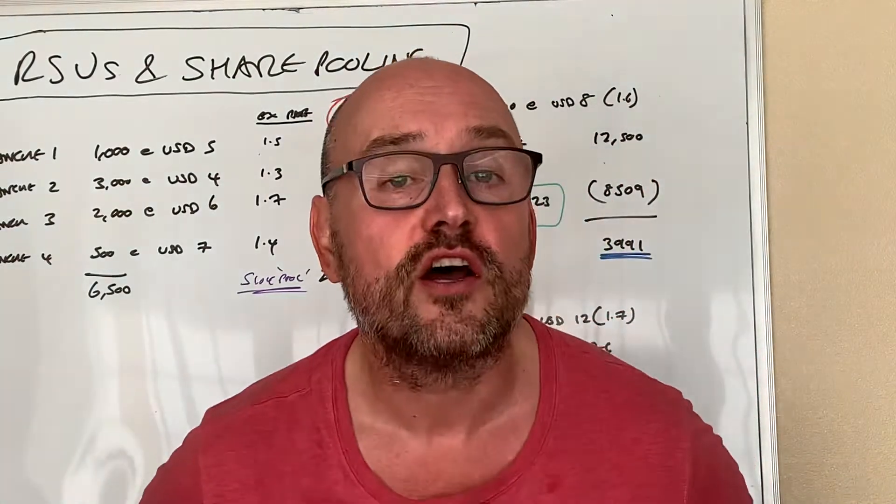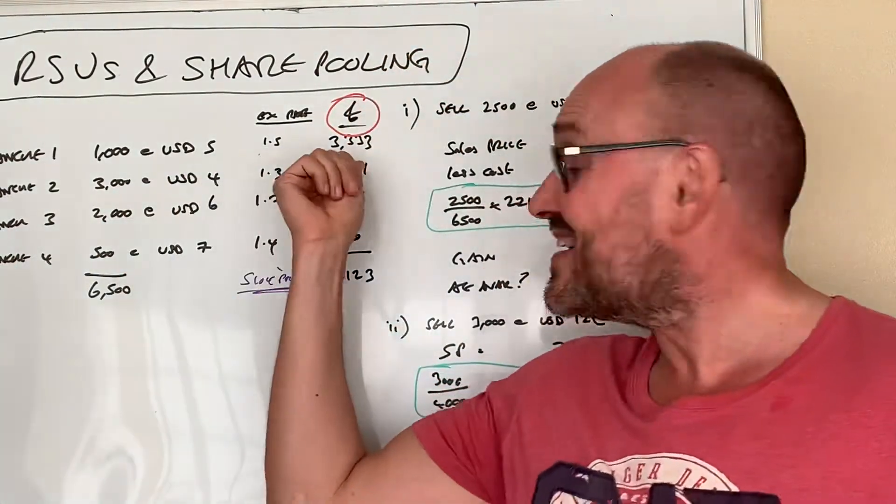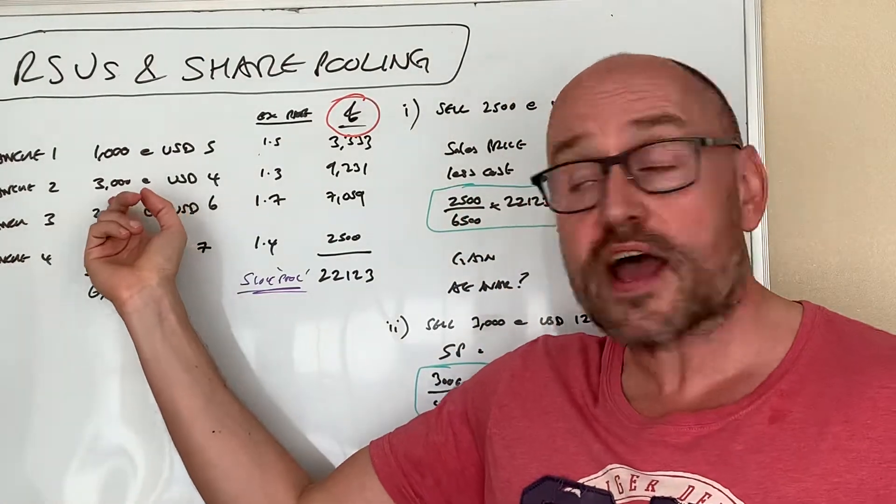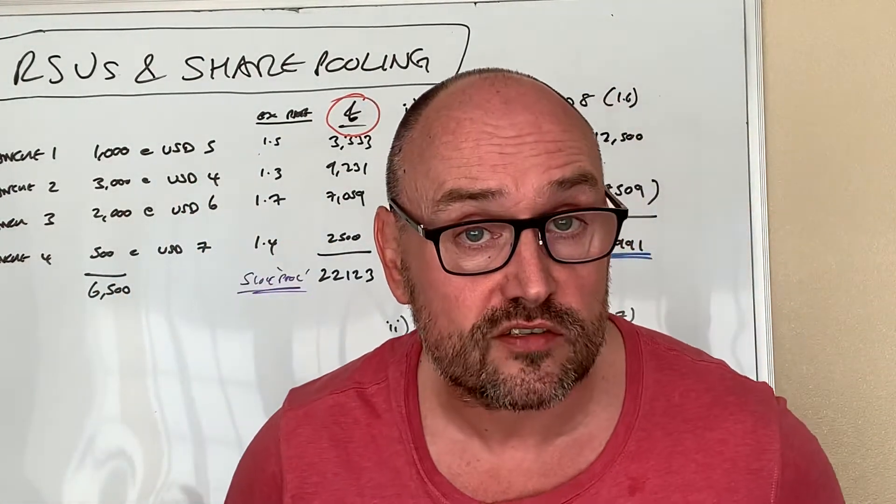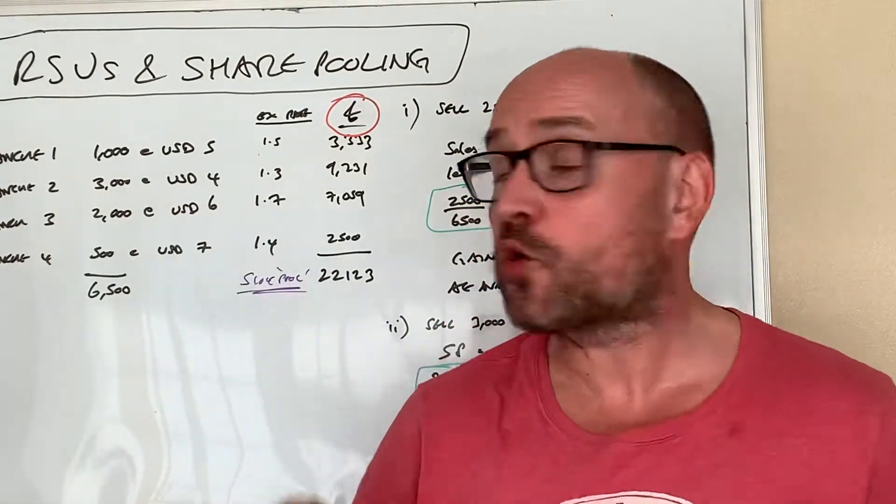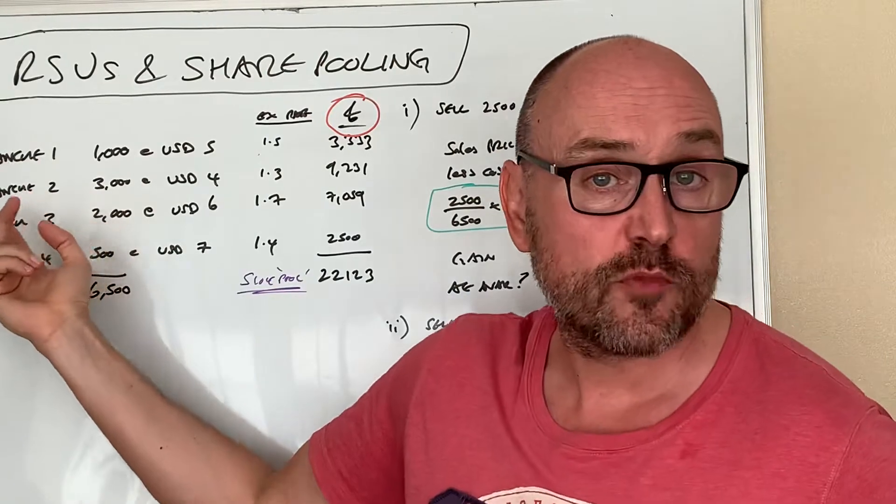Tranche number two, 3,000 shares, four US dollars. Again, convert at the time that you acquired the tranche. This could have been six months, 12 months, 18 months after tranche one.